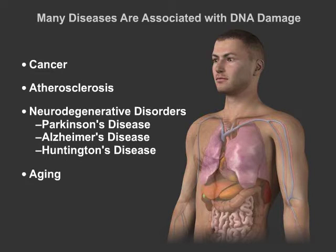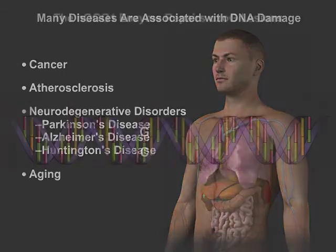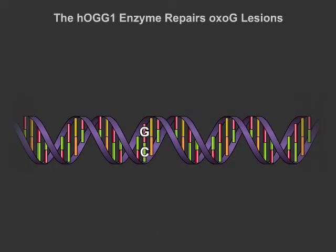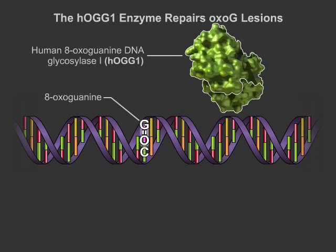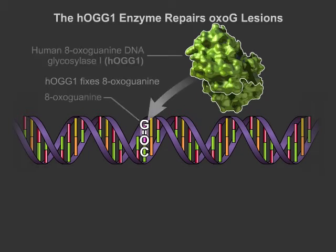Scientists are interested in how cells are able to identify and then correct these lesions. Here, we will focus on research dealing with the DNA lesion 8-oxoguanine. Oxidative stress induces this type of DNA-based damage in which guanine is mutated to 8-oxoguanine. The repair enzyme named human 8-oxoguanine DNA glycosylase 1, or HAG1, performs DNA-based excision repair to fix the lesion.